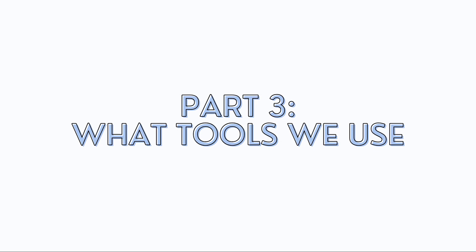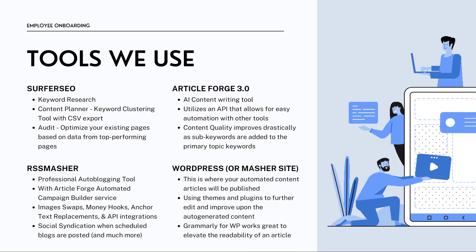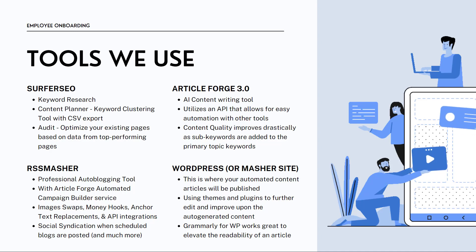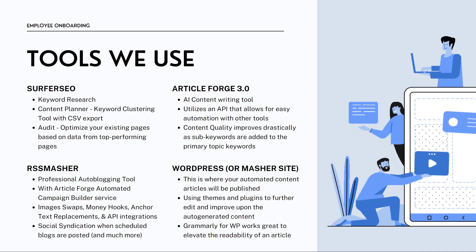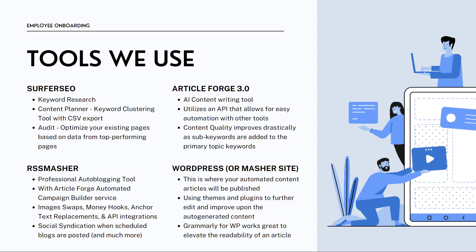Part three: what tools do we use to create this automated original content machine? If you're on the call, you probably have RSS Masher — it's our flagship tool for automating content. We're going to use Surfer SEO today. There are other keyword tools out there, but I like Surfer SEO because it defines exactly the pages I need, builds a topic cluster with sub-keywords in a format that's easy to use with RSS Masher.